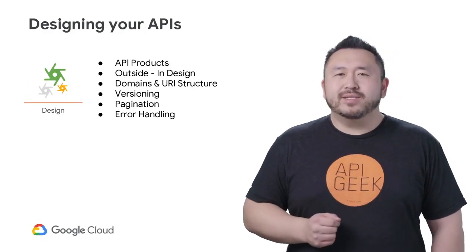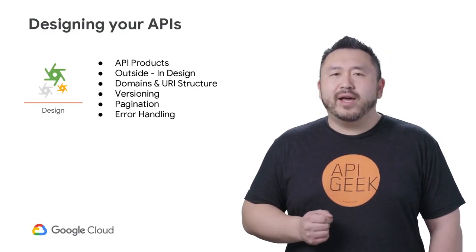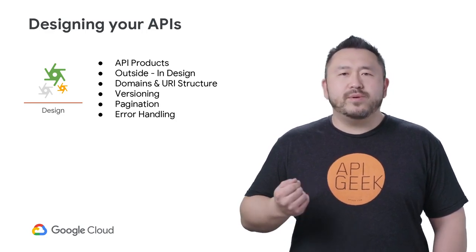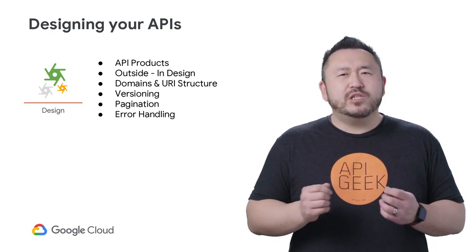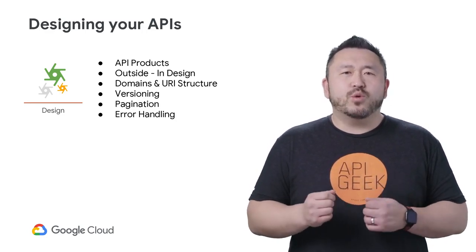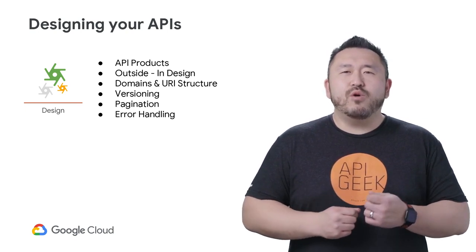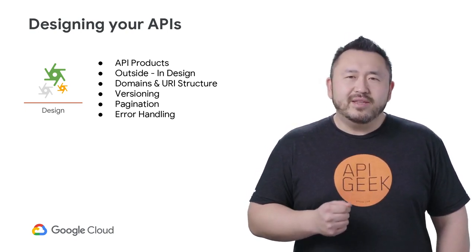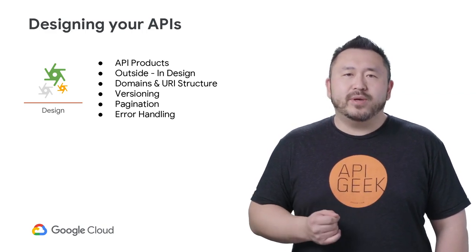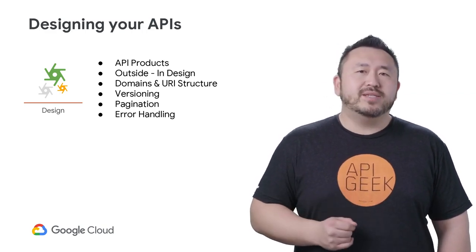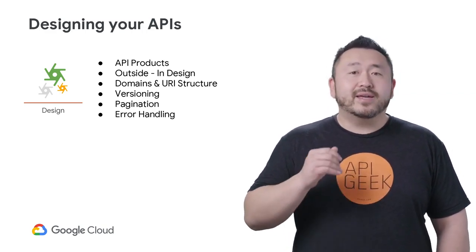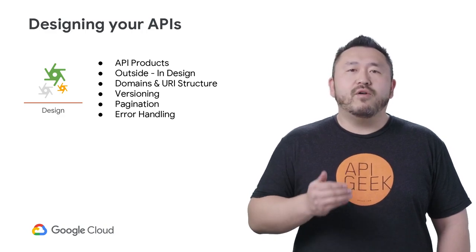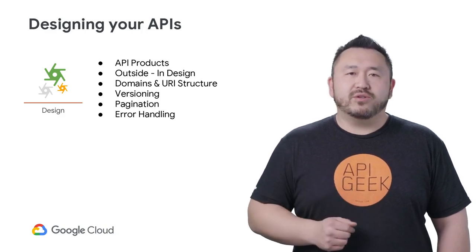At a large enterprise, many different lines of business and API teams will be producing APIs, and it's a slippery slope of discordant design if we don't all follow similar guidelines. This section details the important aspects of your API design, and helps to guide a consistent look, feel, and function of all the APIs in your catalog.